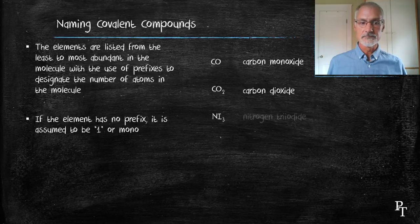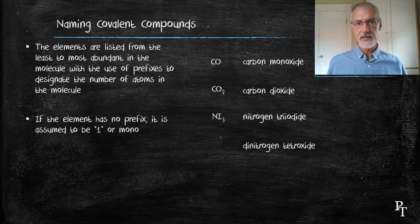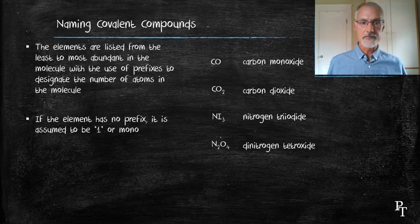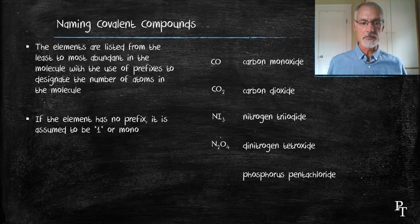Nitrogen triiodide. Let's try going the other way. Dinitrogen tetroxide. Di meaning two nitrogens. Tetra is the short for four, so four oxygens. And in my last example, phosphorous pentachloride, one phosphorous with five chlorines.